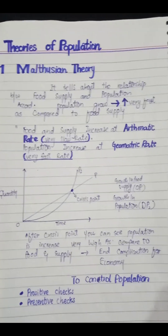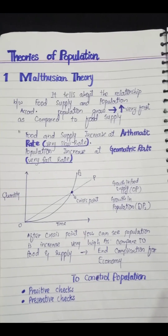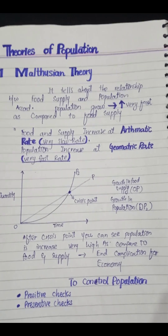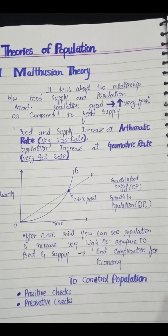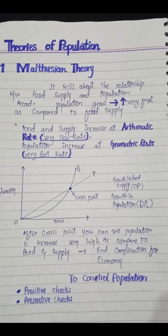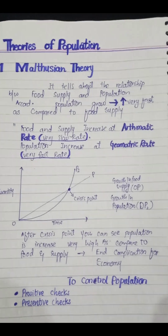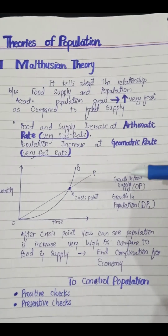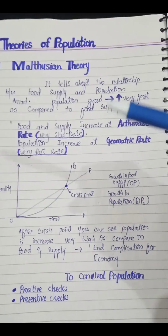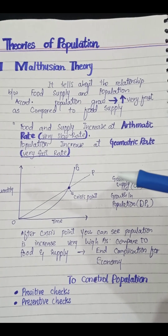The Malthusian theory is named after the economist Malthus. In this theory, we study the relationship between food supply and population. According to this theory, population grows very fast as compared to food supply — the population growth rate is more as compared to food supply.